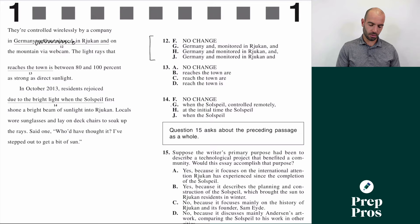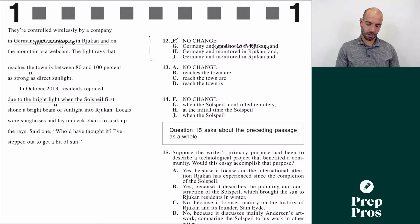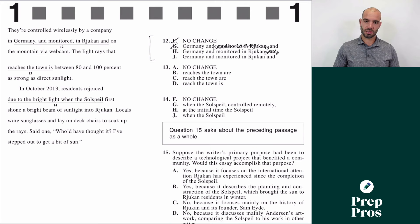What about G? If we see commas here and here, it looks like I can cross this off. But if I say "they're controlled wirelessly by a company in Germany and" — that makes no sense. In H, the two commas let us cross off "and." So if I read without the "and": "they're controlled wirelessly by a company in Germany and monitored in Rukjan on the mountain via webcam" — well, it doesn't quite make sense either. So the correct answer is J — we can just keep all the information, there's nothing we can cross off. Use that crossing-out trick on test day.